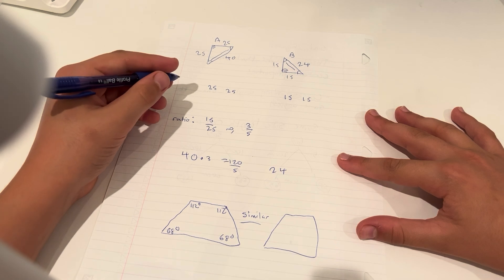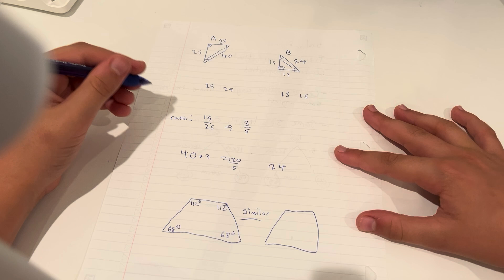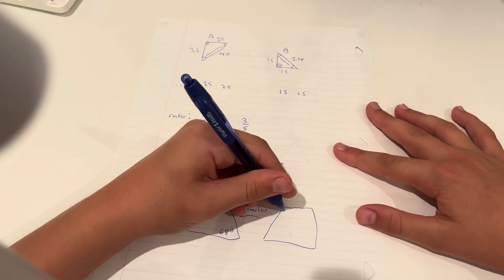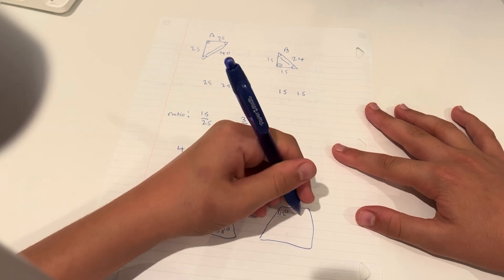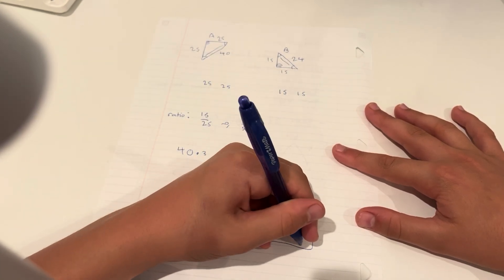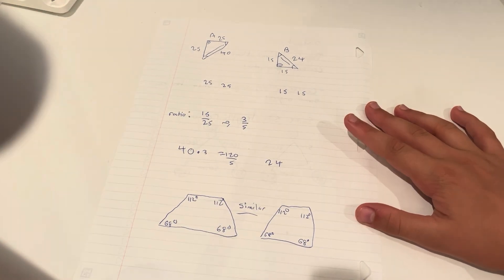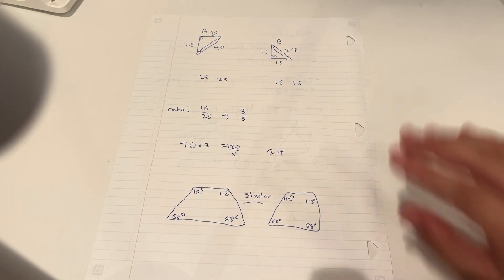So what we know is that if these two are similar, and they're oriented the same way, then this will be the same as this. So we know that these two are going to be congruent. So these angles are all going to be the same. Okay. So now we know a little bit about similar figures.